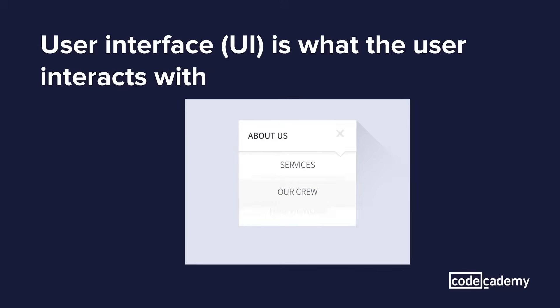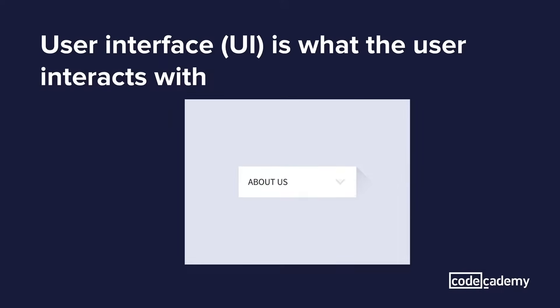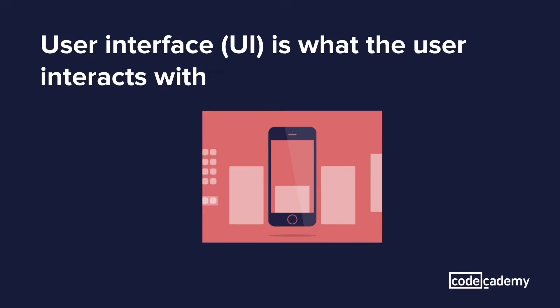For example, you can have a button on a website or a drop-down menu on your mobile application. Those are all parts of the UI design that a user can interact with to drive the application.